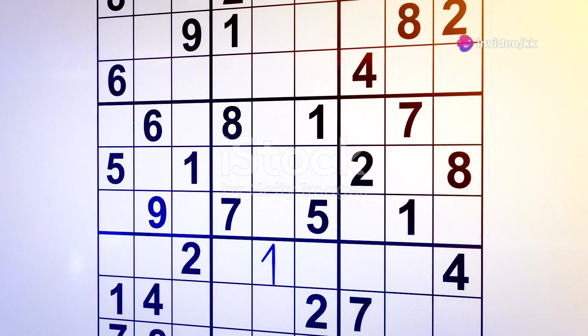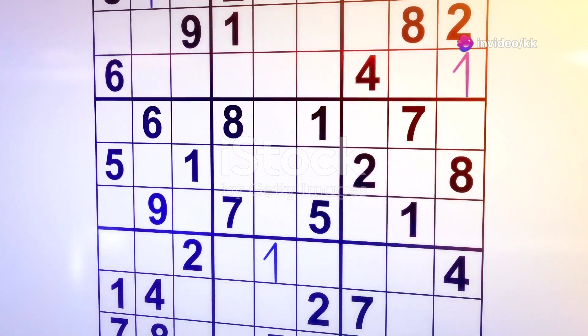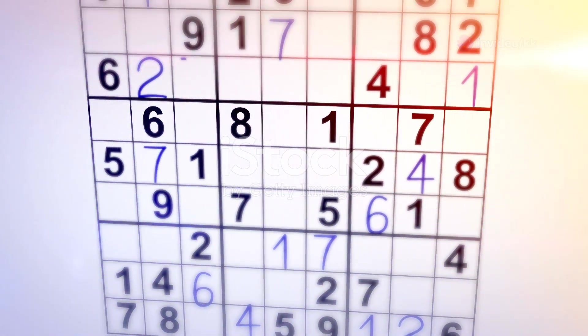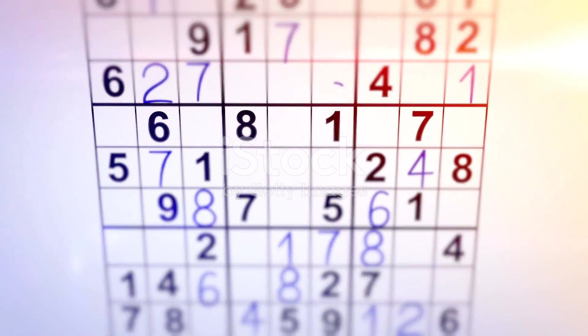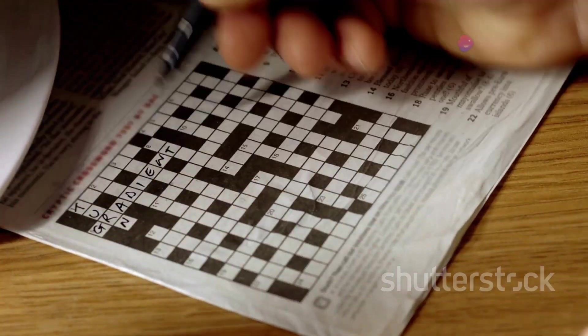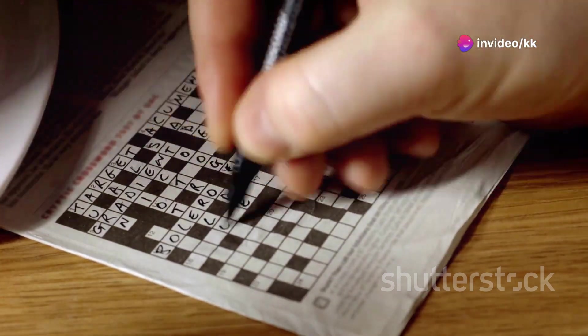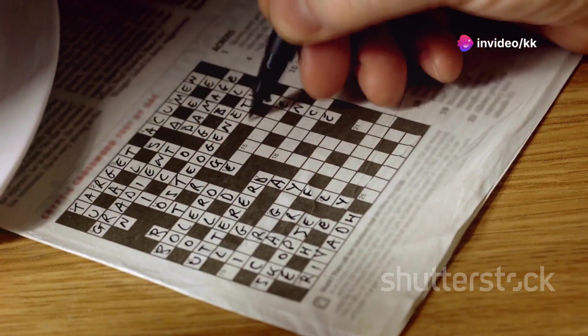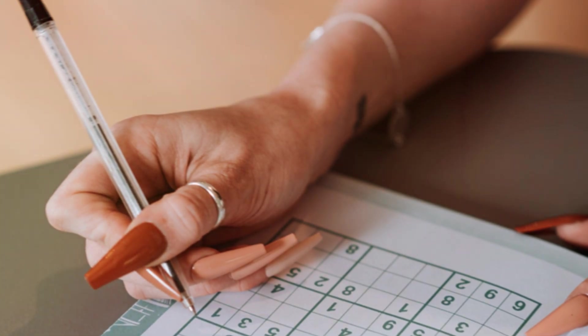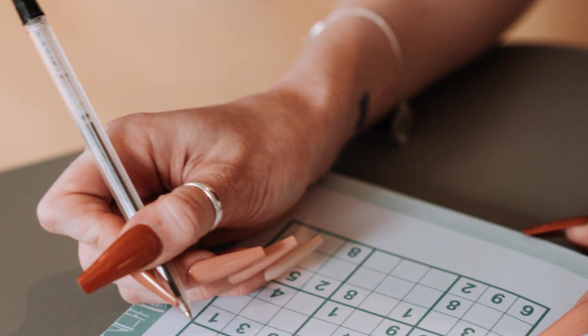Take Sudoku as an example. This popular puzzle requires you to fill a 9x9 grid with numbers so that each row, column and subgrid contains all the digits from 1 to 9, without repetition. Filling a 9x9 grid, according to the rules, might require considerable brain power. You need to consider multiple possibilities and eliminate options systematically, which can be quite time-consuming and mentally taxing.